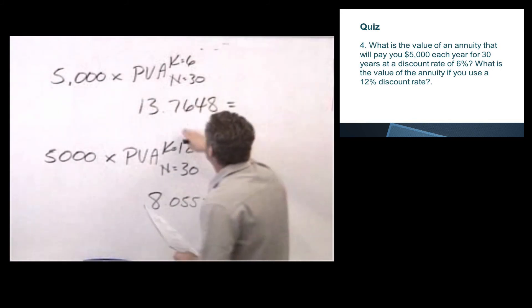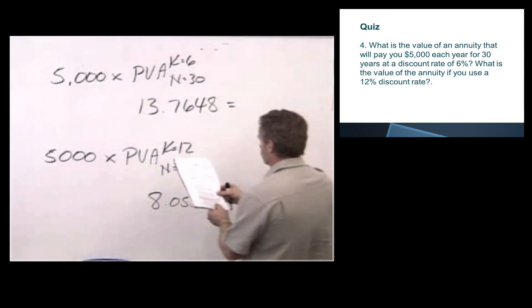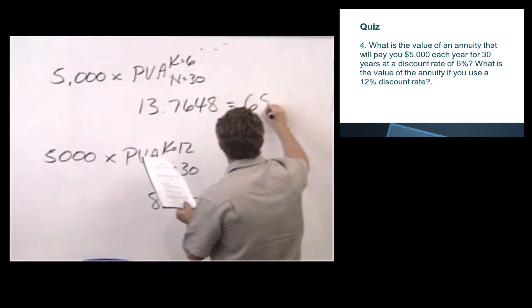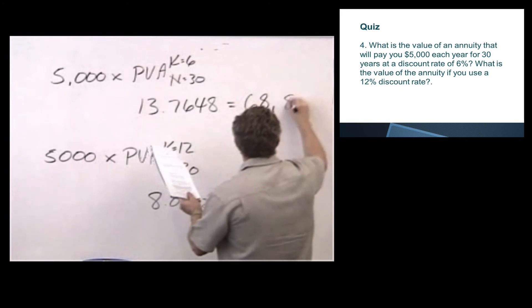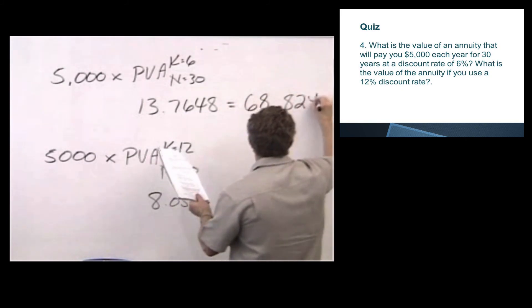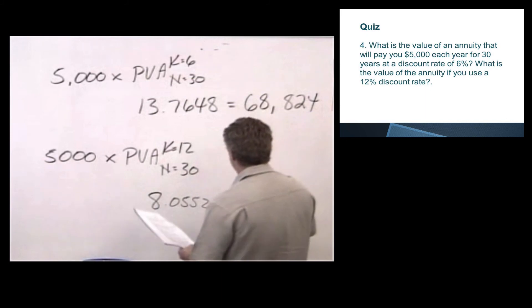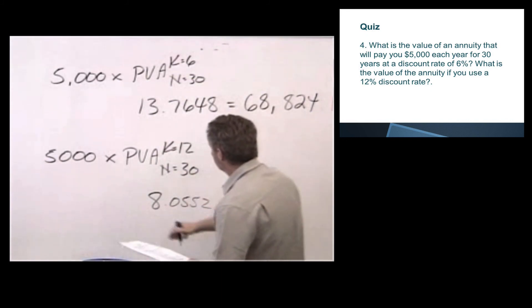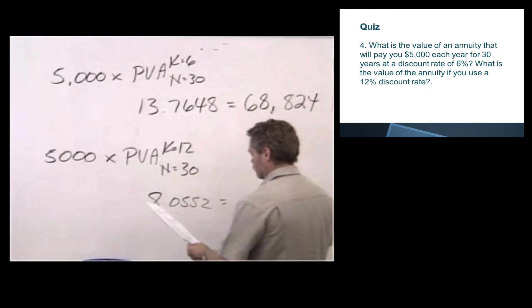We multiply our factor times our 5,000. We get a value of 68,824. And the bottom one, 5,000 times 8.0552, gets us a value of 40,276.